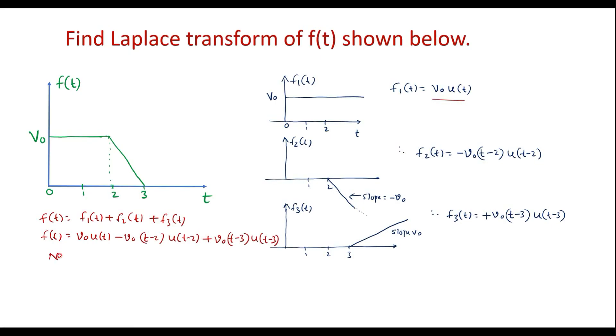So now, taking Laplace transform, we can write F of s is equal to, here v0 is constant, Laplace transform of u of t is 1 by s, that is 1 over s minus v0.